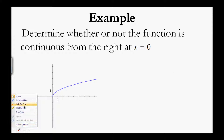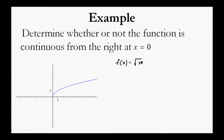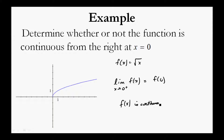An example to clarify this notion: determine whether or not the function is continuous from the right at x equals 0. The function here is f of x equals the square root of x. The limit of f of x as x approaches 0 from the right equals f of 0. Therefore, f of x is continuous from the right at x equals 0.